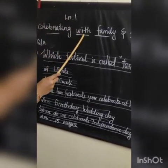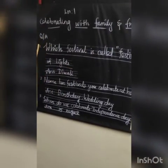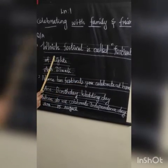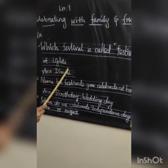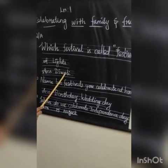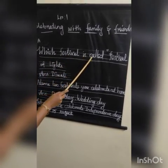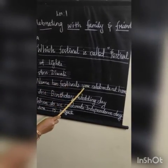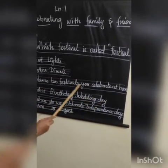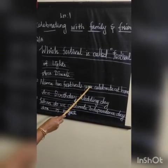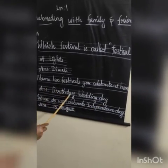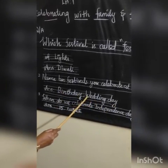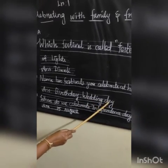Lesson 1 - Celebrating with Family and Friends. Question and Answer. 1st question: Which festival is called Festival of Lights? Answer: Diwali. 2nd question: Name two festivals you celebrate at home. Answer: Birthday, Wedding Day. B-I-R-T-H-D-A-Y Birthday, W-E-D-D-I-N-G D-A-Y Wedding Day.